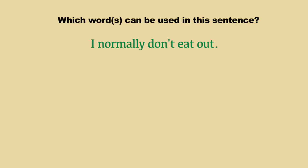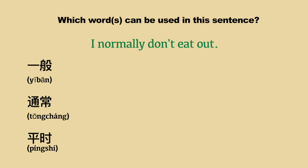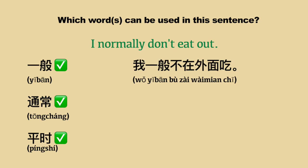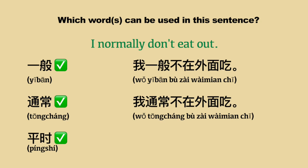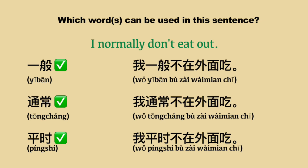Let's take a quick quiz together. Sentence one: 'I normally do not eat out.' Which word — or words — can we use? 一般, 通常, or 平时? We can use all three: 我一般不在外面吃, 我通常不在外面吃, or 我平时不在外面吃.